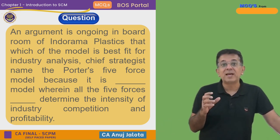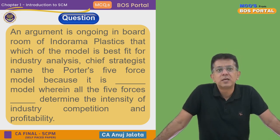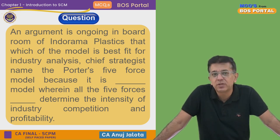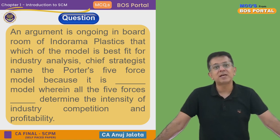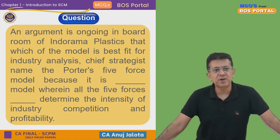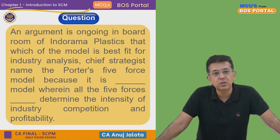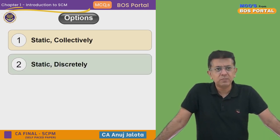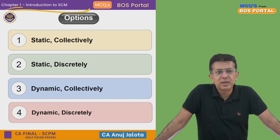Every company operates in some industry and you need to analyze how profitable that industry is. The chief strategic model deemed fit is Porter's Five Forces model, because it is a dash model wherein all five forces dash determine the intensity of industry competition and profitability. So two fill-in-the-blanks need to be filled. The four options are: static and collectively, static and discreetly, dynamic and collectively, and dynamic and discreetly.